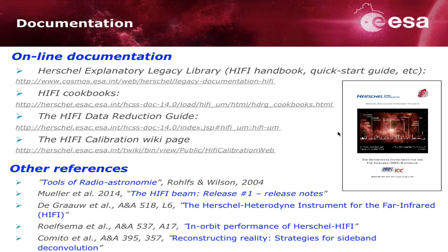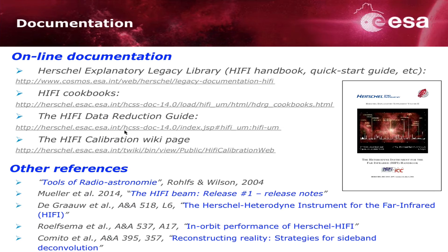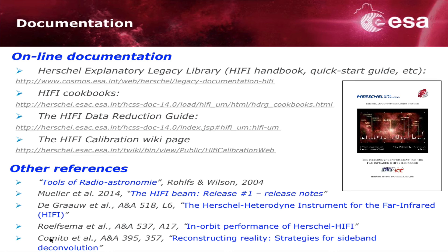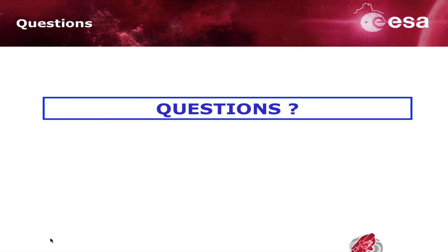For more information, the absolute reference is the HI-FI handbook, found in the legacy documentation page — the HI-FI component of the Explanatory Legacy Library. There are also cookbooks specific to the different observing modes, and documentation for HIPE, our software, where you can find what the tasks are capable of doing for data reduction. For more general references on radio astronomy and heterodyne detection, a series of papers are provided. I'm ready to take questions.